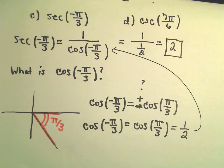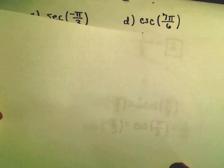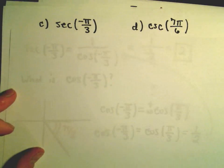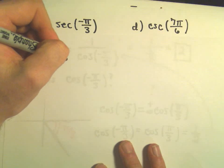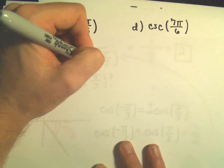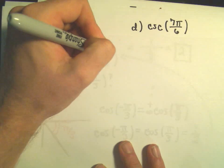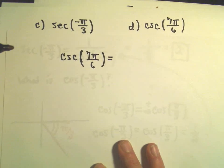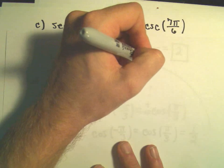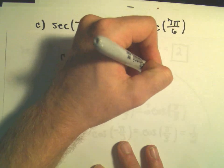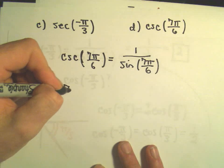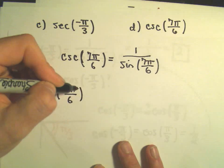Let's do one last one: cosecant of 7π over 6. I'm going to do the same thing. Cosecant of 7π over 6 — well, cosecant is the same thing as 1 over sine of 7π over 6. So my goal in this case is to really figure out sine of 7π over 6.